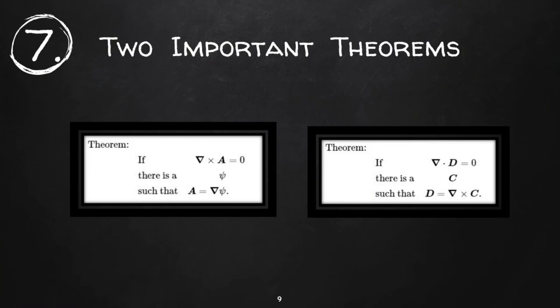Next we can learn about two important theorems. First one is, if the curl of any quantity say A is zero, then there exists a scalar quantity say psi such that A is equal to grad of psi. The second theorem is, if the divergence of any quantity is zero then the quantity must be curl of some other vector field. And Laplacian is a scalar operator.